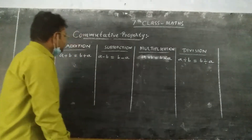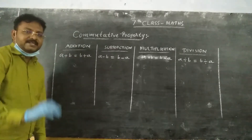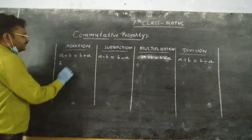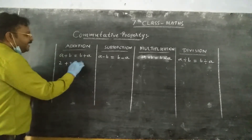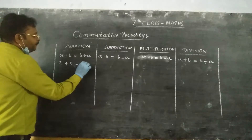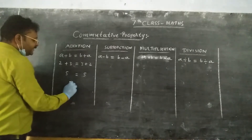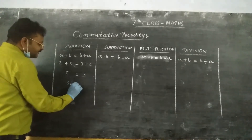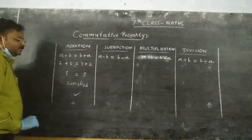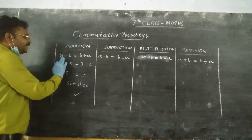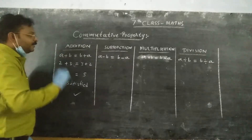So firstly I am going to verify commutative property under addition. Take two integers: 2 and 3. LHS: 2 plus 3 equals 5. RHS: 3 plus 2 also equals 5. So commutative property is satisfied under addition, because the value of a plus b is equal to b plus a.